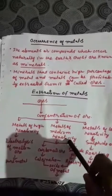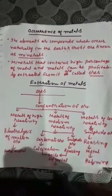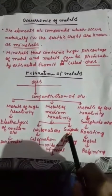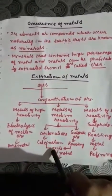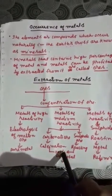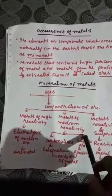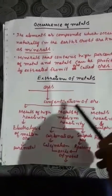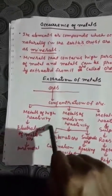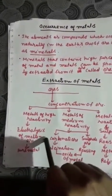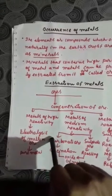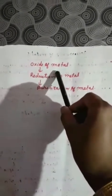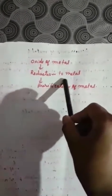Metals of medium reactivity are found mainly as carbonate ores or sulphide ores. If found as carbonate ore, we use the calcination method to convert them to the oxide form. If found as sulphide ore, we use roasting to convert them to the oxide. Metals of high reactivity are extracted by the electrolysis method. For medium-reactivity metals, after obtaining the oxide by roasting or calcination, we reduce the metal and then purify it.